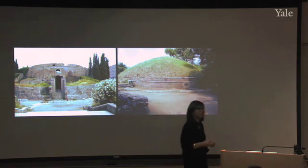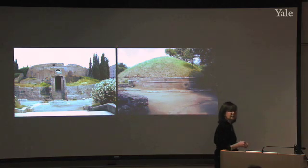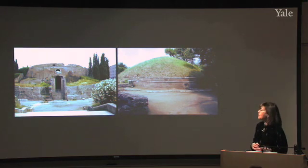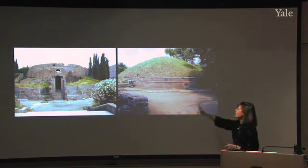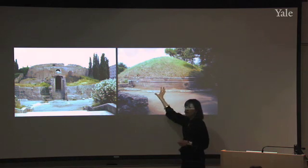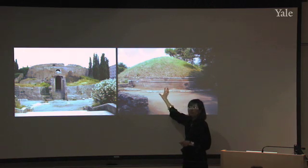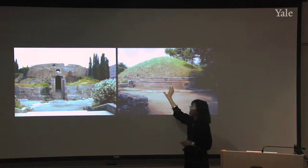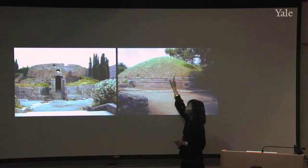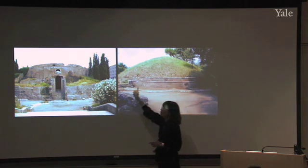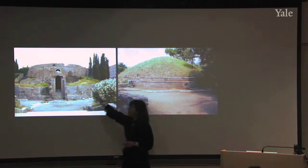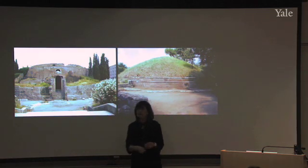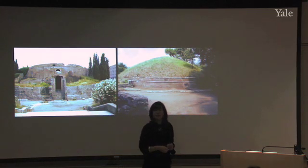The Mausoleum of Augustus is 290 feet in diameter — it's a very large building. But if you expand the size of one of these tumulus tombs at Cerveteri, and if you plant this with trees, because we know that the Mausoleum of Augustus was planted with trees on the earthen mound.